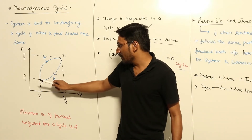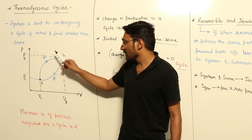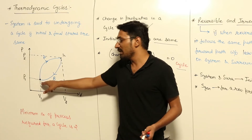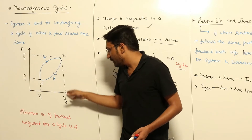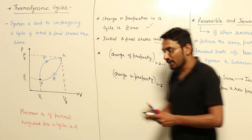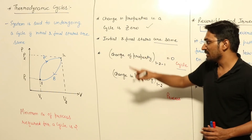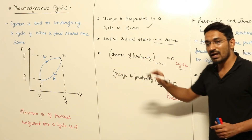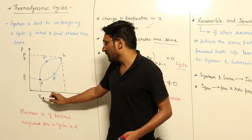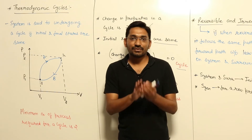For a single process — say process A from point 1 to point 2 — the change in property is not zero. The change in pressure is P2 minus P1, and the change in volume is V2 minus V1. Since P2 is not equal to P1 and V2 is not equal to V1, there is a change in property for a process, but for the complete cycle the change is zero.